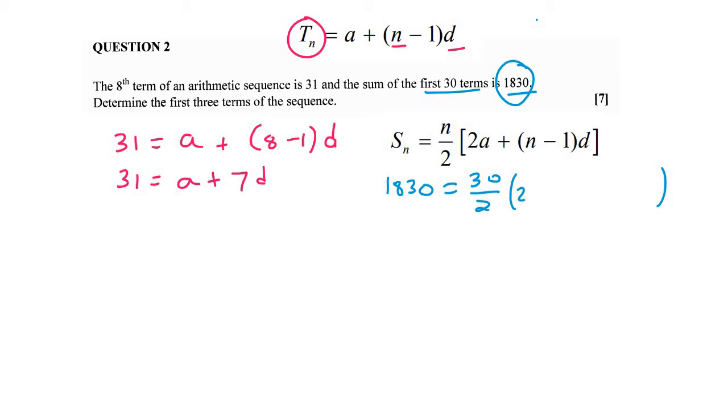And then A is, we don't know. 30 is the term number for this one, and the common difference, we don't know. Then we just want to simplify this as much as we can. So 30 divided by two is 15, 2A, and then 30 minus one is 29. Fantastic.